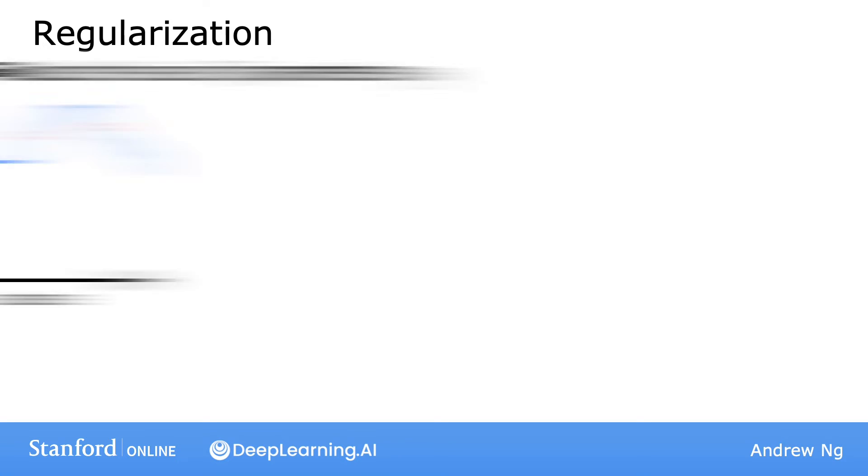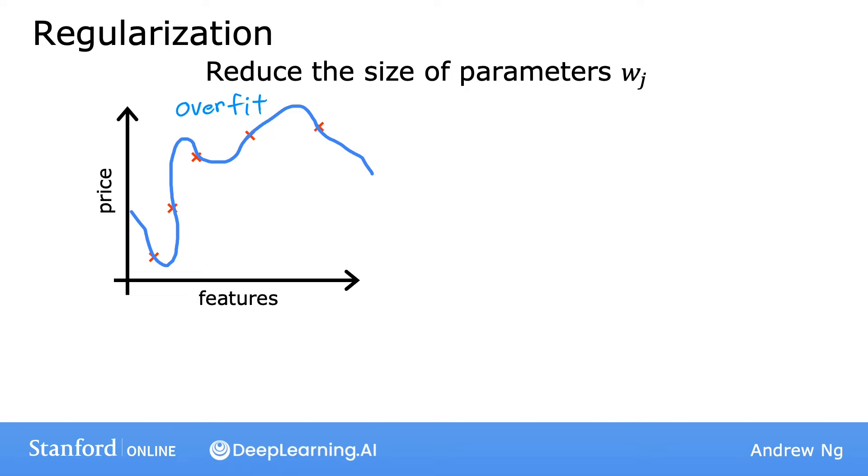If you look at an overfit model, here's a model using polynomial features x, x squared, x cubed, and so on, you find that the parameters are often relatively large. Now, if you were to eliminate some of these features, say if you were to eliminate the feature x4, that corresponds to setting this parameter to zero. So setting a parameter to zero is equivalent to eliminating a feature, which is what we saw on the previous slide.